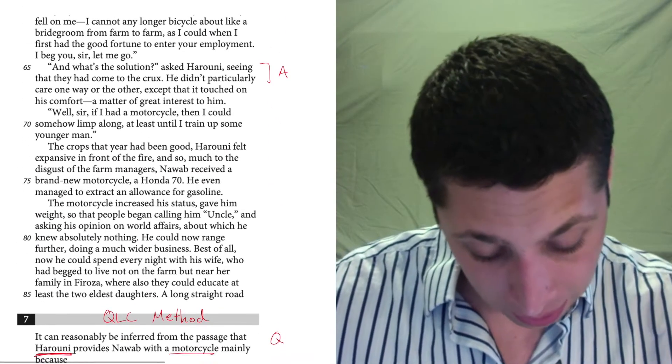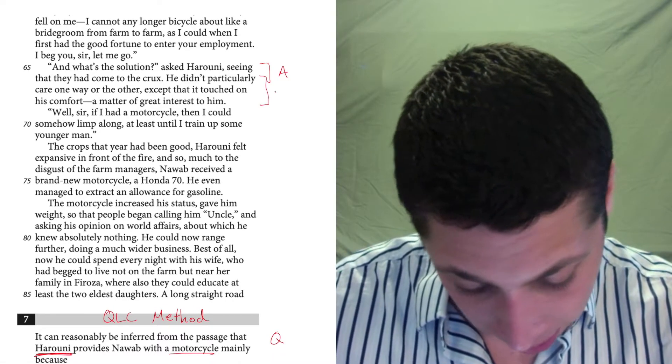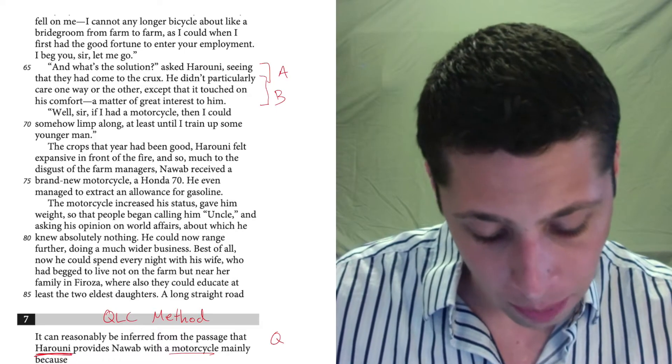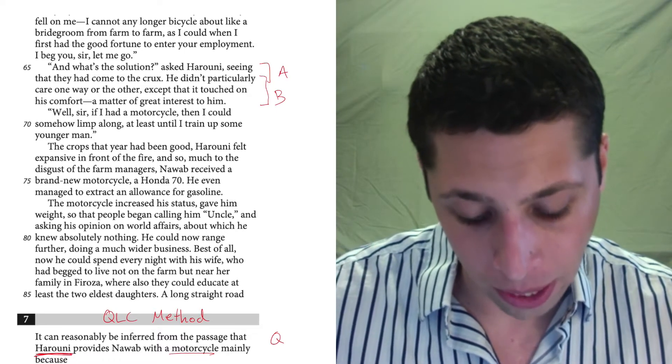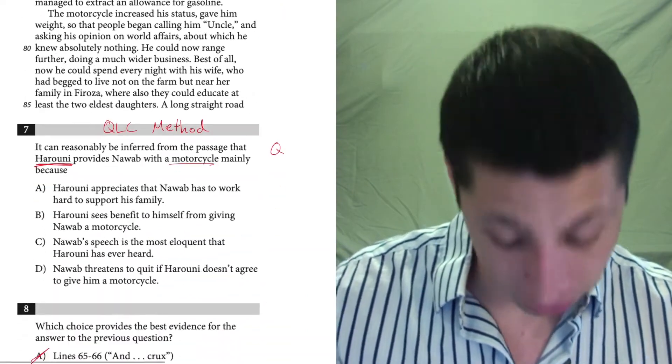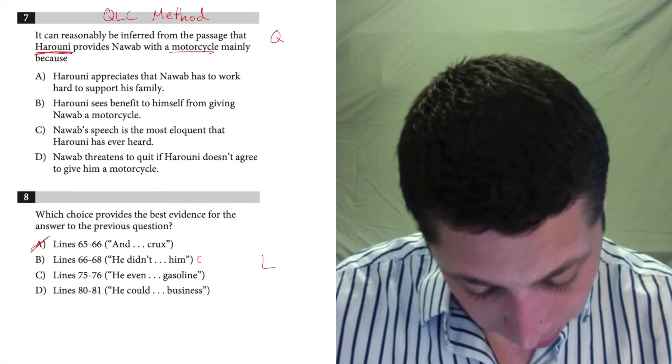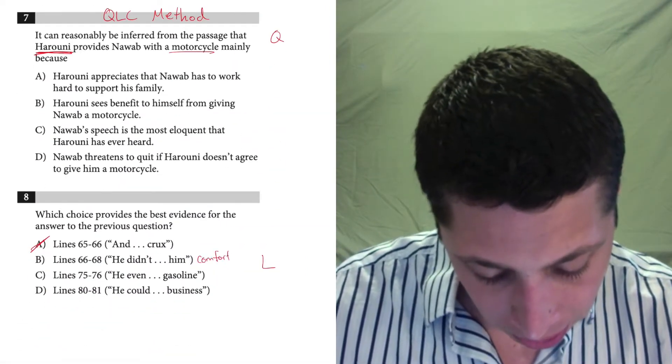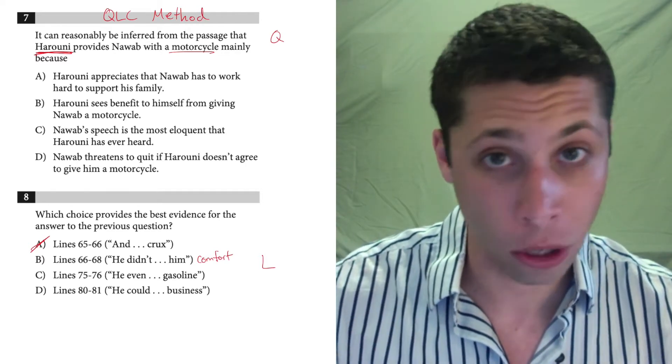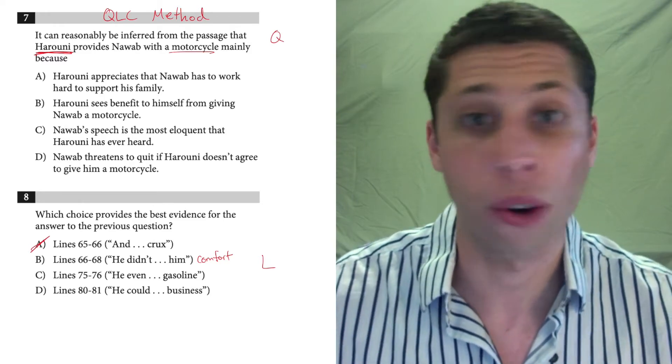Next is 66 to 68, that's right here. He didn't particularly care one way or the other except that it touched on his comfort, a matter of great interest to him. Okay, well, it's saying that Haruni cares about his own comfort. So I would just maybe write that next to here so that I don't forget because there's a lot of stuff moving around. It's very likely that I forget what I've read, so this is me just keeping track.